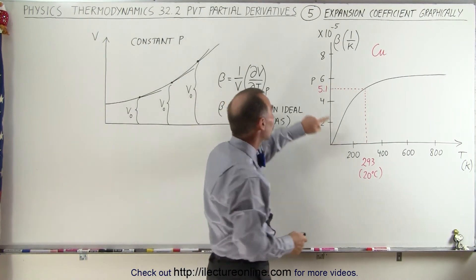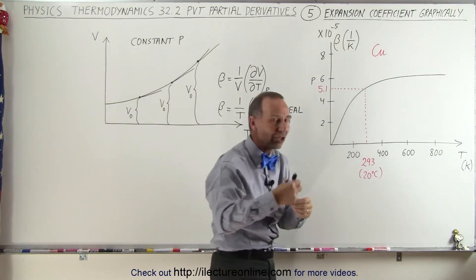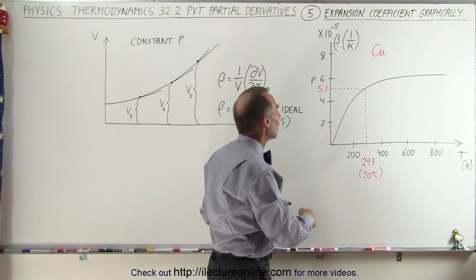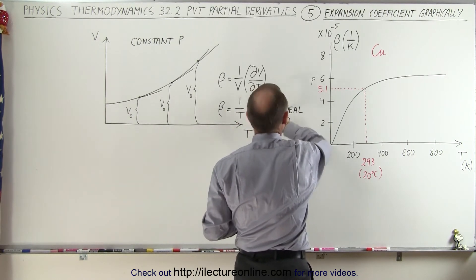Well, it turns out that at that temperature it's 5.1 times 10 to the minus 5 per Kelvin. So that would be the change for every 1 degree Kelvin. Notice it does not follow the 1 over T change because that's for an ideal gas.